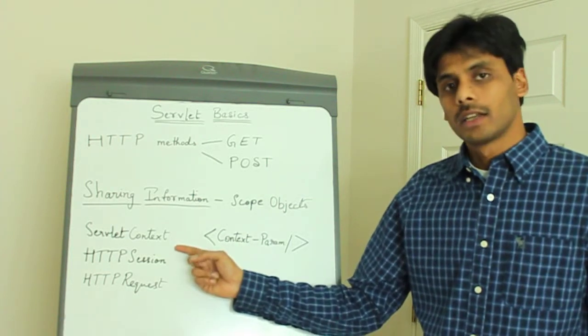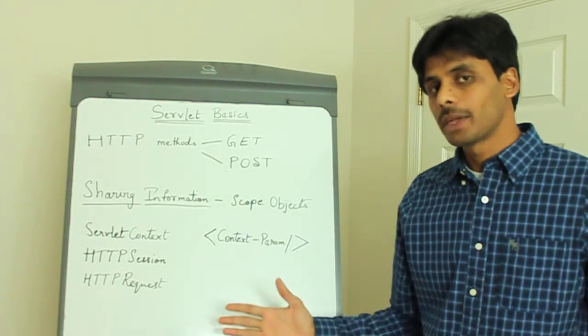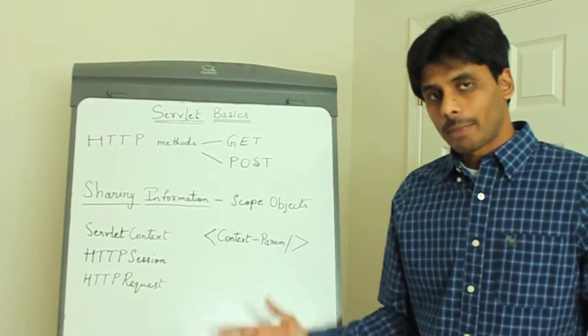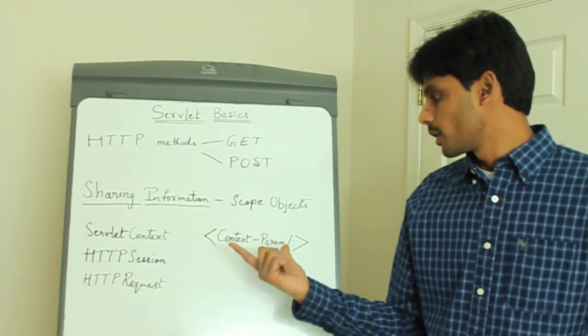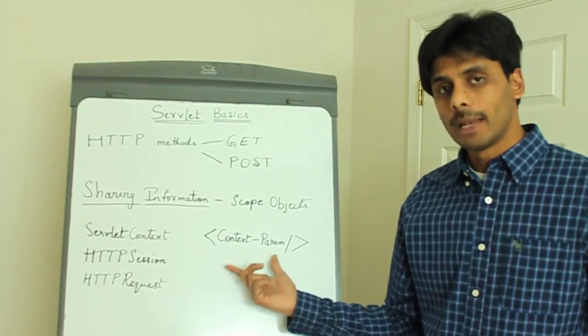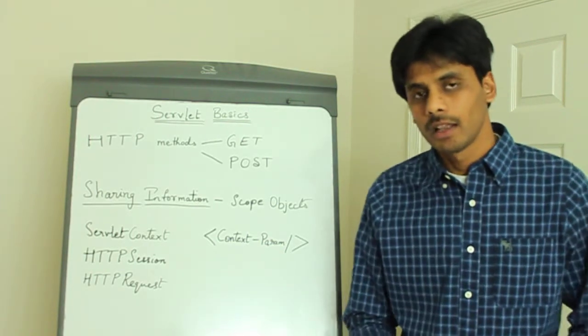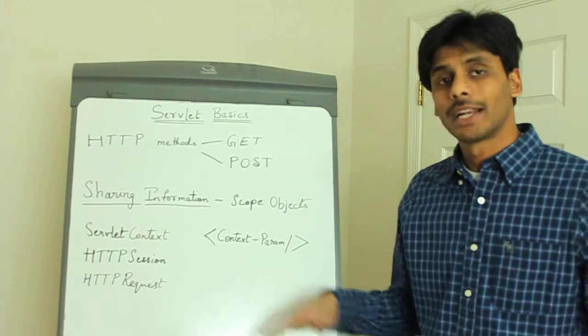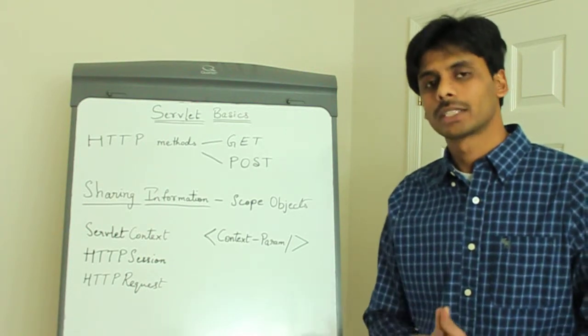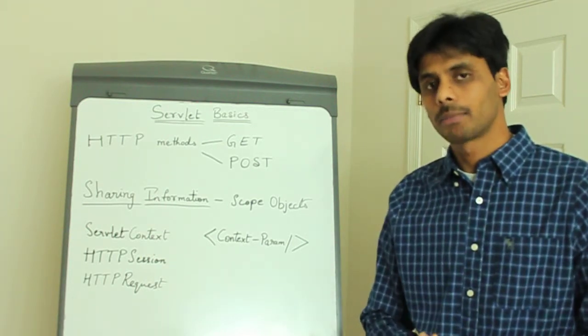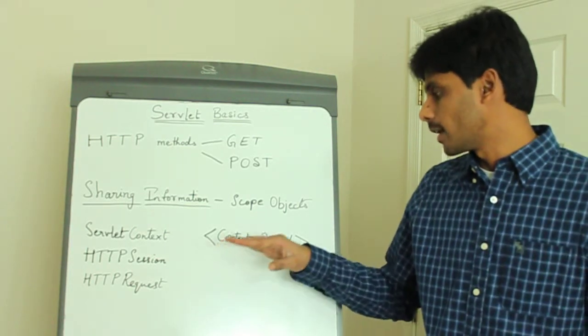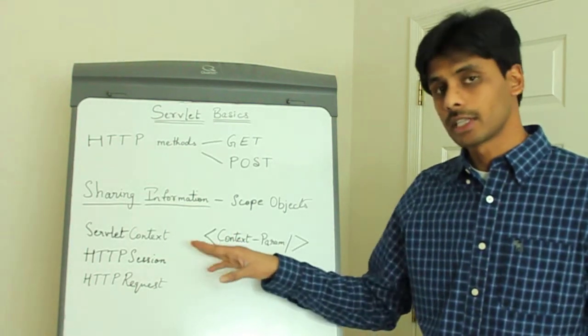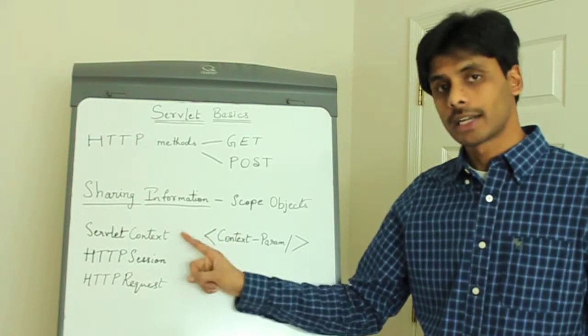The servlet context has all the information about your web container and also carries the information you specify within a context param element within your web.xml. I will discuss more on this when I do the hands-on example. I will show you the various elements within a deployment descriptor file, the web.xml file, and also how to retrieve the context parameters within your servlet class using the servlet context object.